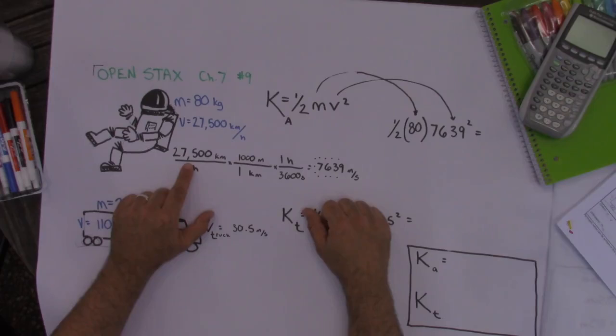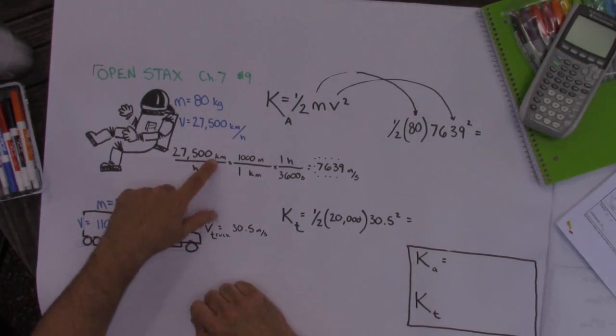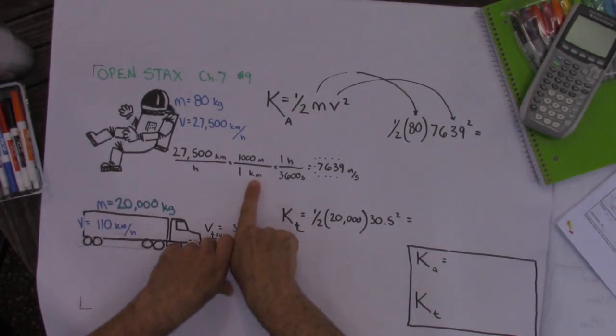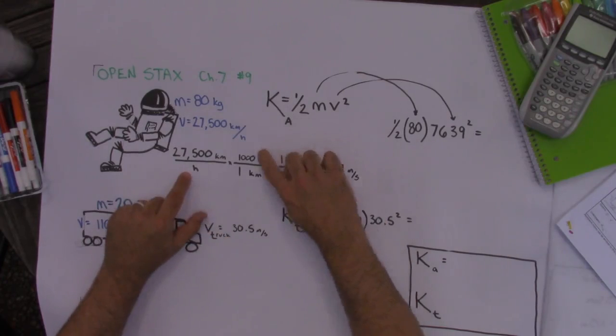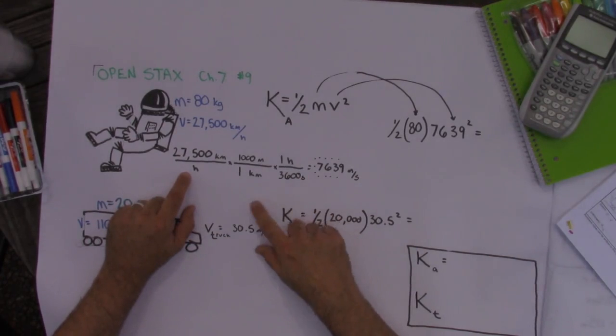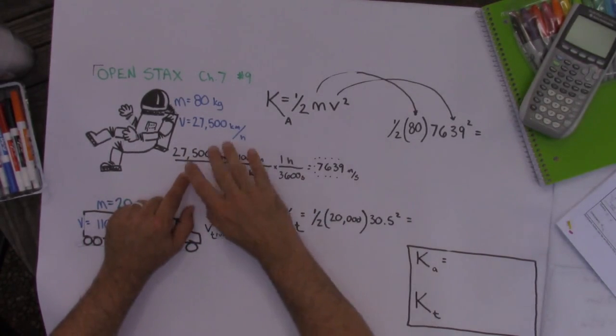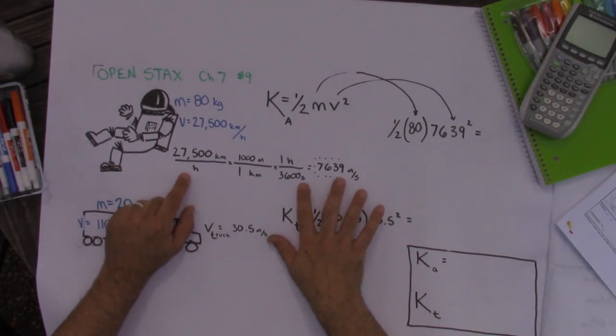Alright. So here's what I did. I took the first velocity of the astronaut and I said, well, that's in kilometers per hour and I need kilometers to go away. So I put kilometers on the bottom and one kilometer is a thousand meters. Now I need hours to go away and I want to get an answer in meters per second. So I put seconds on the bottom. I put hours on top, did the math for you. And that turns out to be 7,639 meters per second.